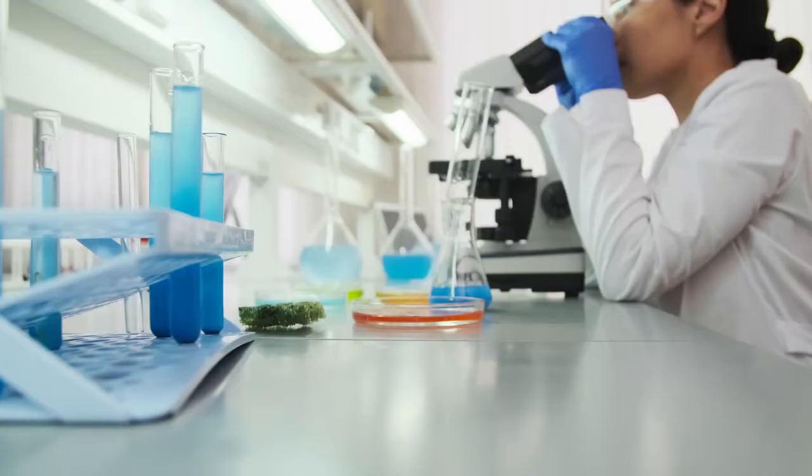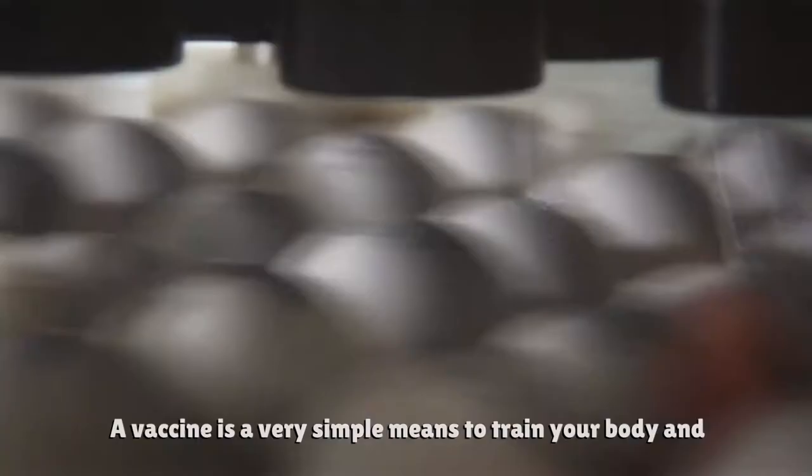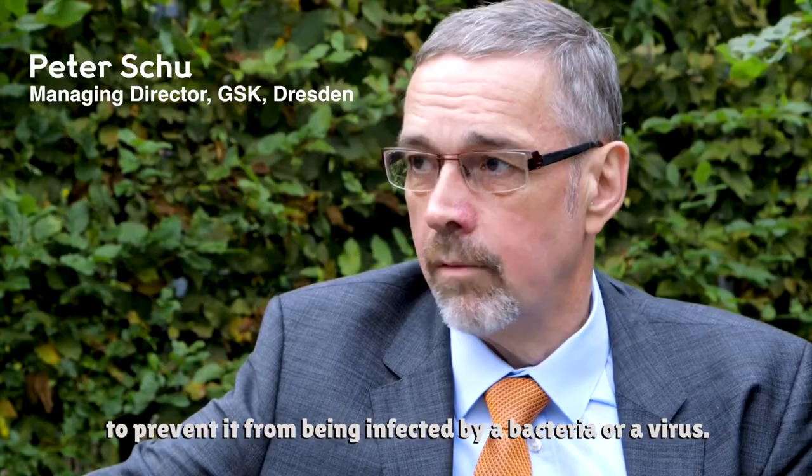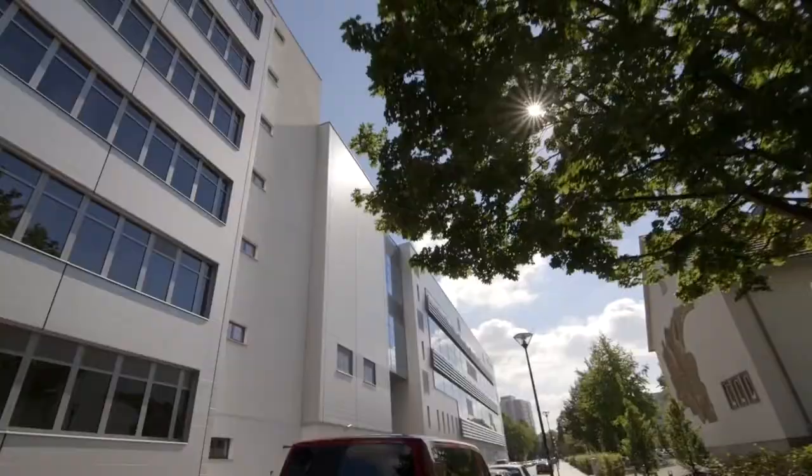Let's first see what vaccine exactly is. A vaccine is a very simple mean to train your body and to prevent it from being infected by a bacterium or a virus. This organization manufactures influenza vaccines, seasonal and pandemic influenza vaccines. They use eggs for this process.